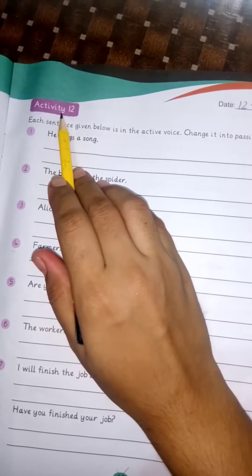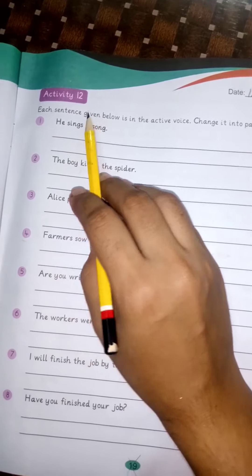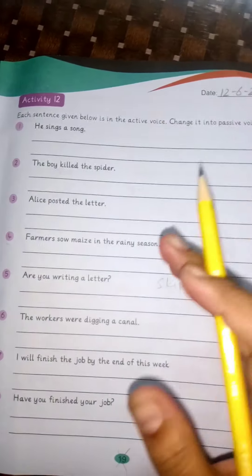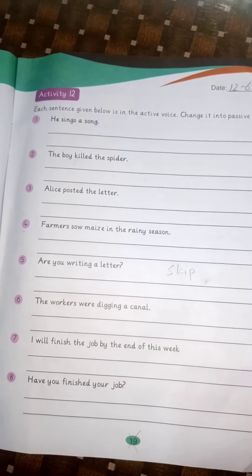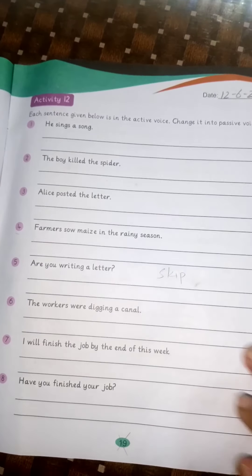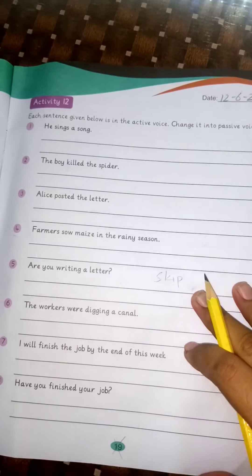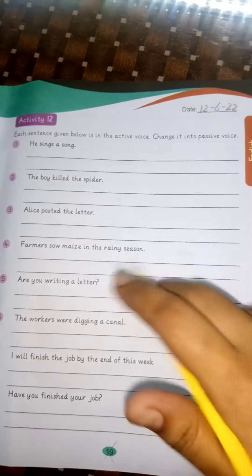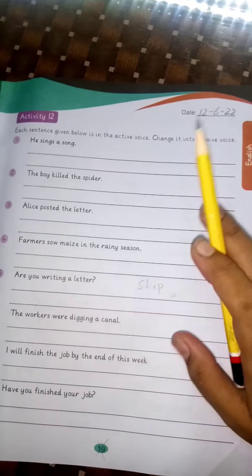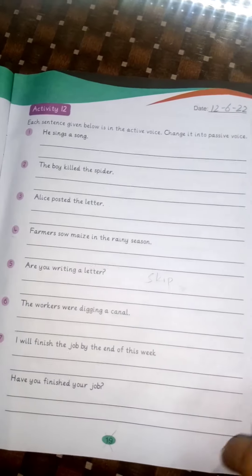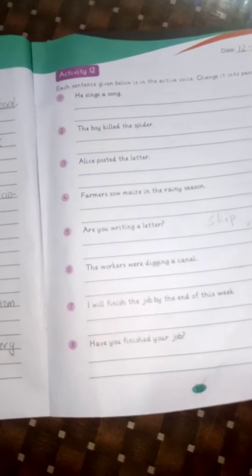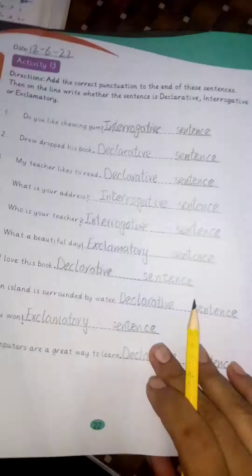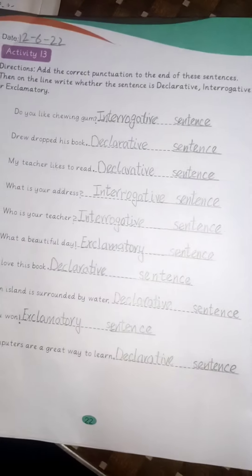Now activity number twelve. If you are studying in Allied School Jinnah Campus, the teacher has skipped this page. Otherwise you can change sentences from active to passive voice. Activity twelve is being skipped.